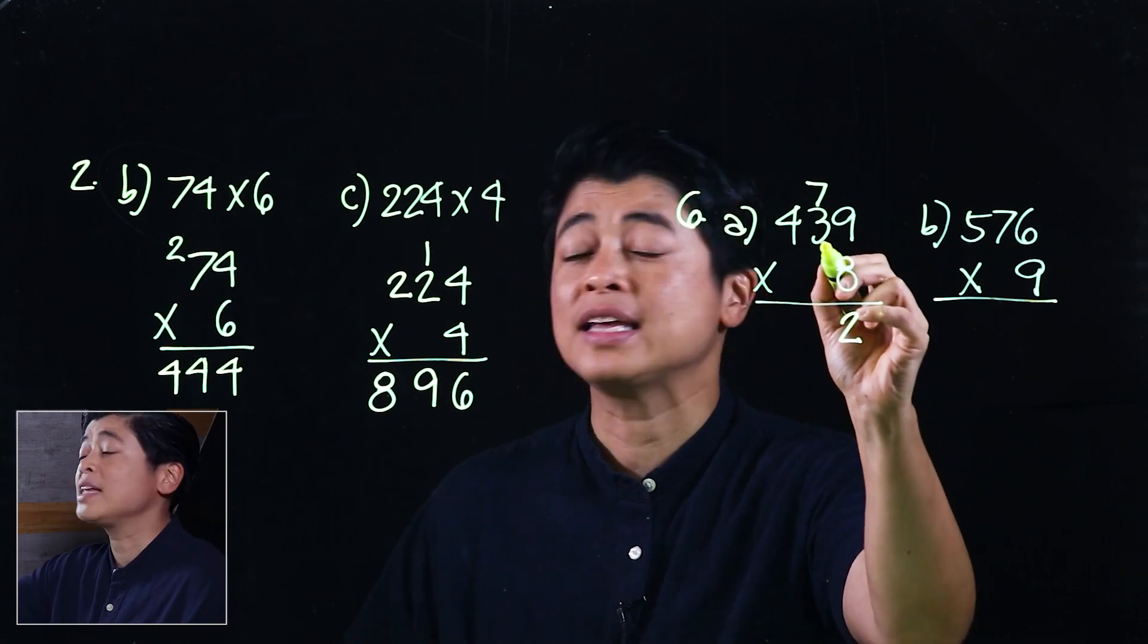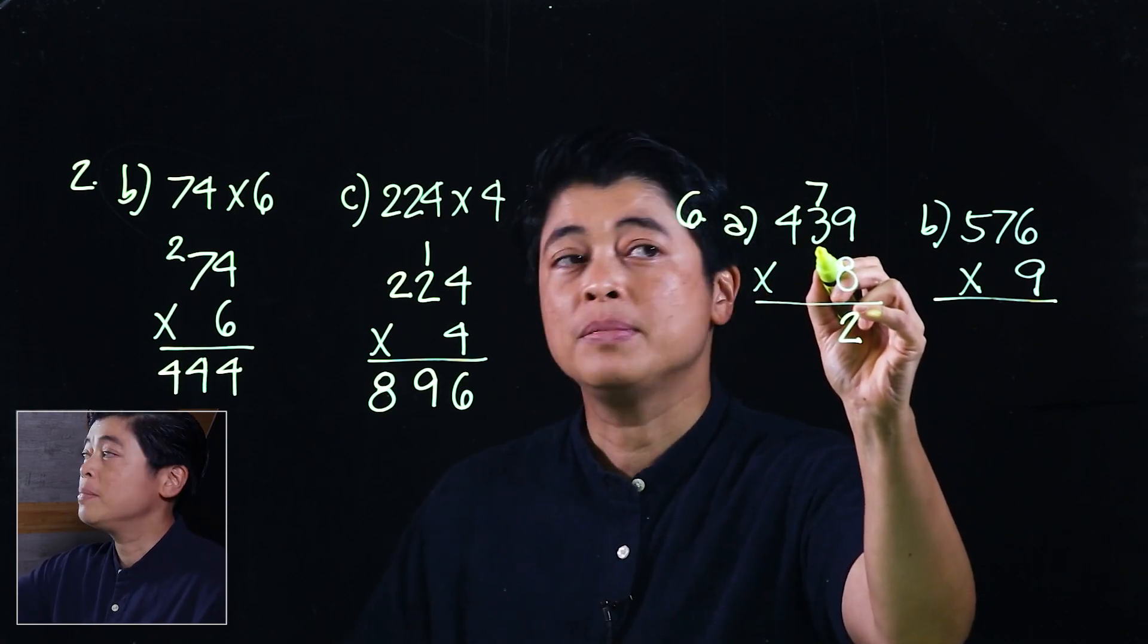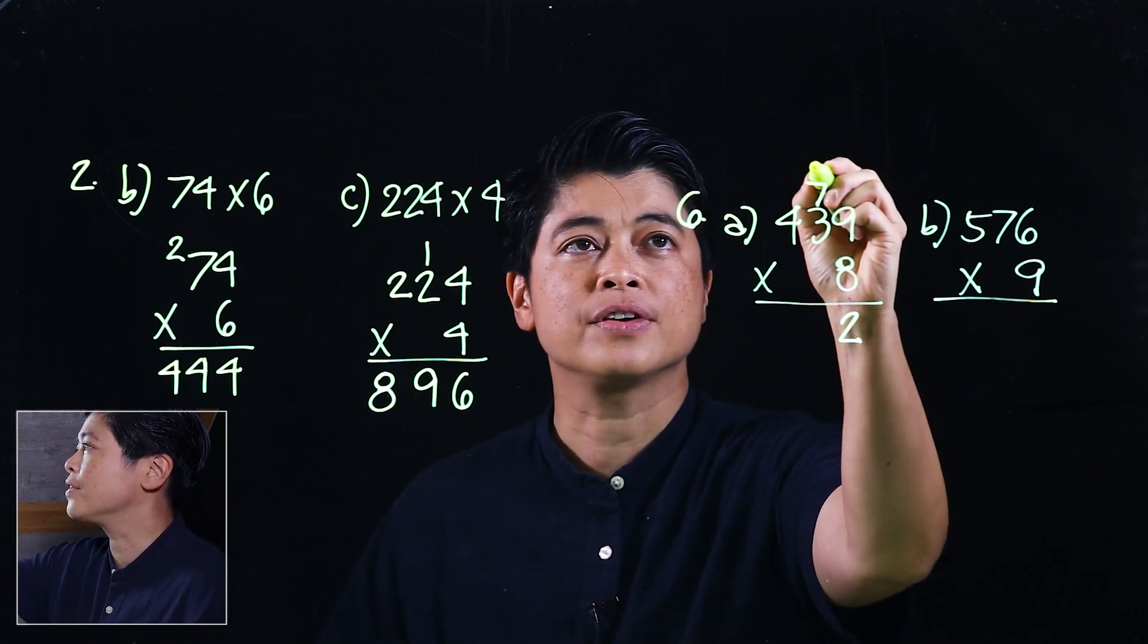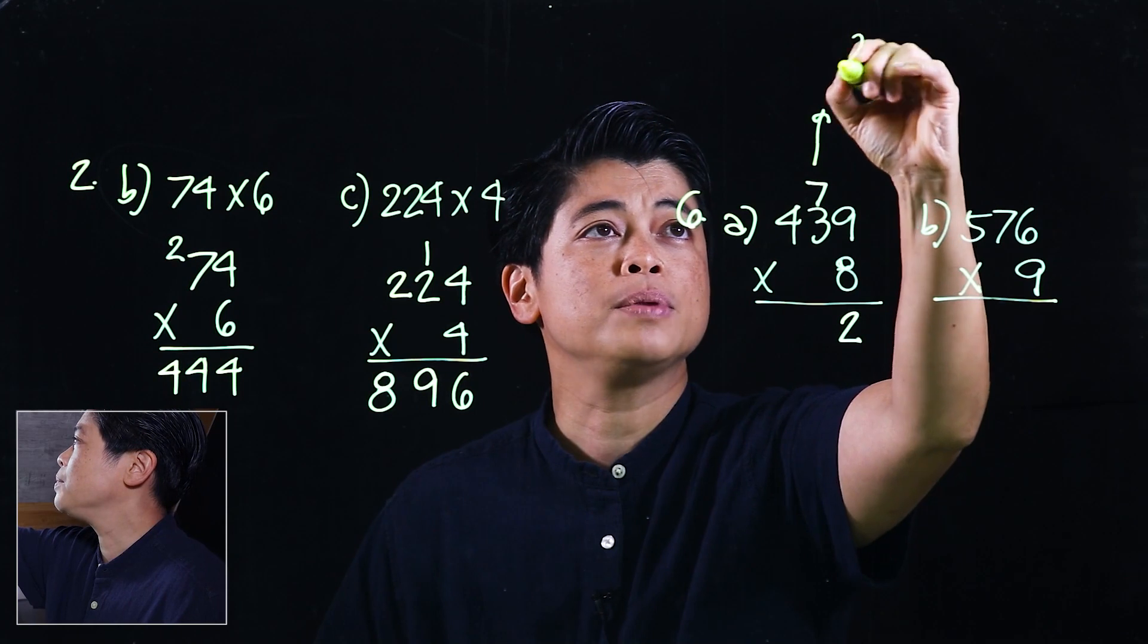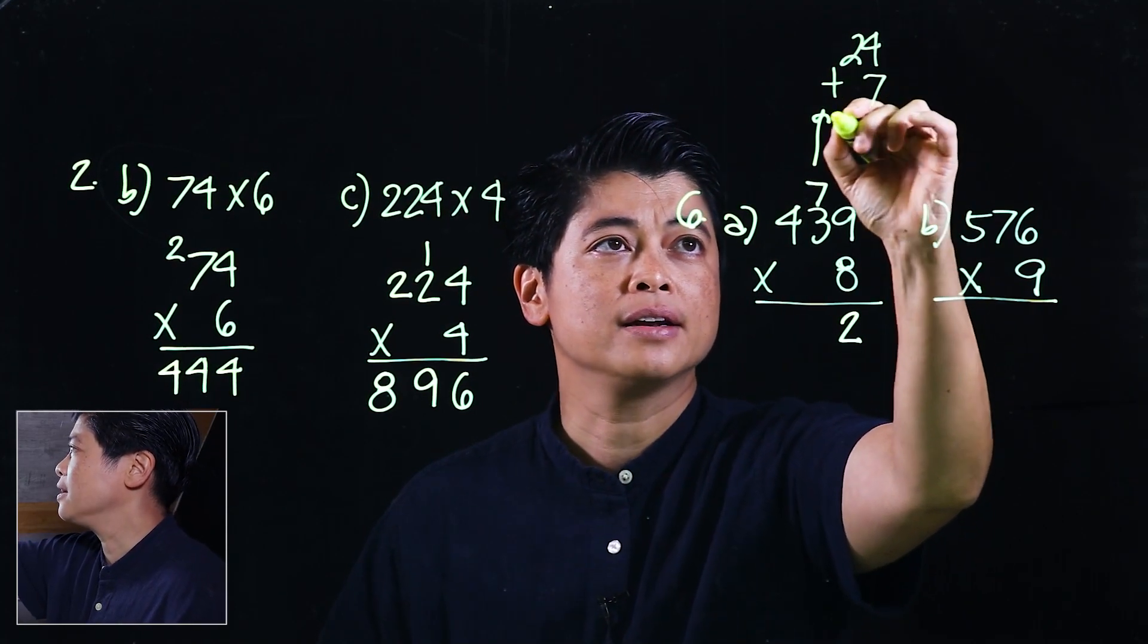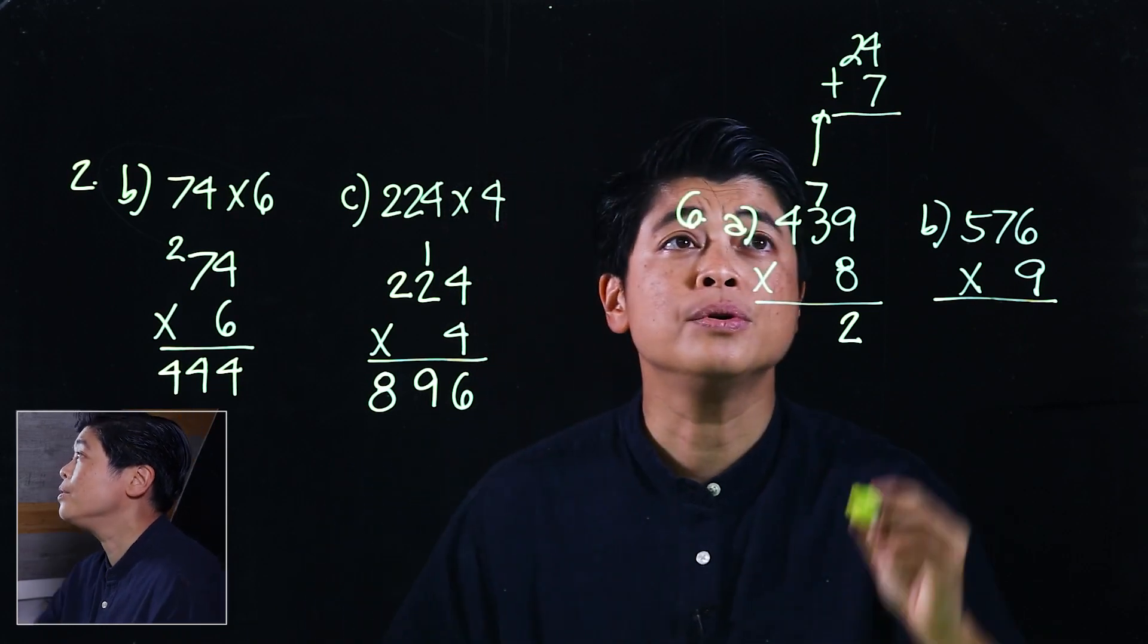Now we're gonna multiply the 8 times the 3. When we multiply the 8 times the 3 that would be 24, but we need to add the 7. I'm gonna put that over here so that would be 24 plus 7.